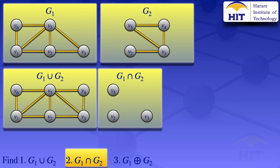Then we look at the edges that are in G1 and G2. The edges that are common are: an edge between V2 and V3, and an edge between V3 and V5. So those are the common vertices and edges — that is our intersection of G1 and G2.